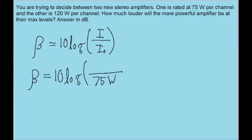If we put the weaker speaker, 75 watts, in the denominator, and put 120 watts in the numerator, then the answer will tell us how much more powerful the top one is than the bottom one.